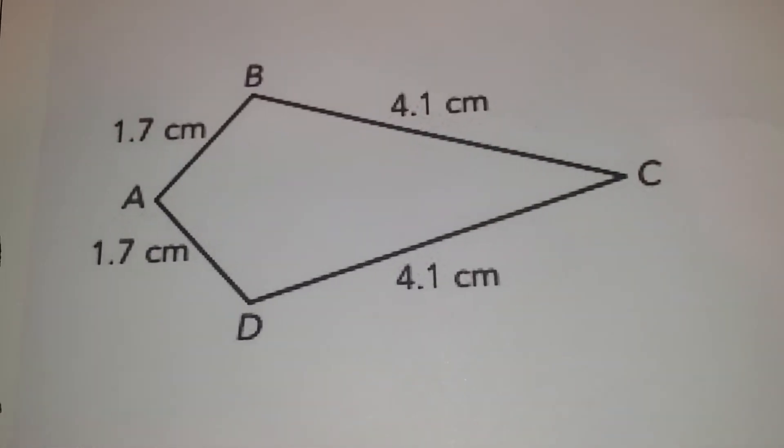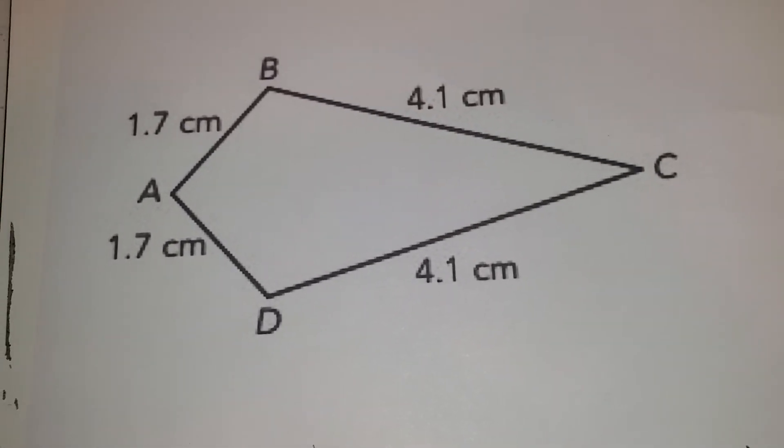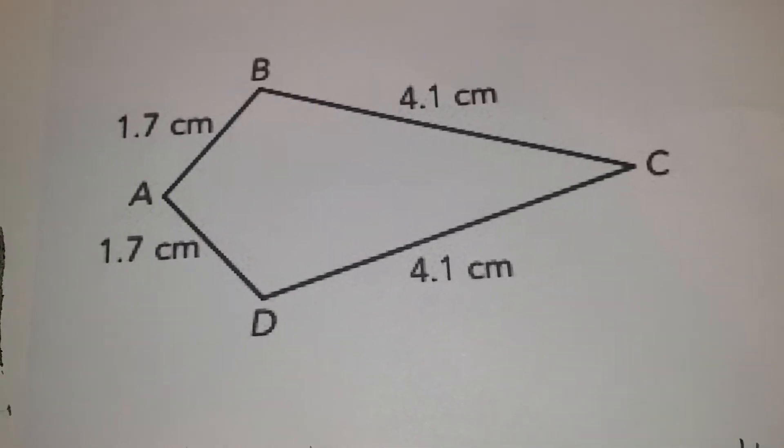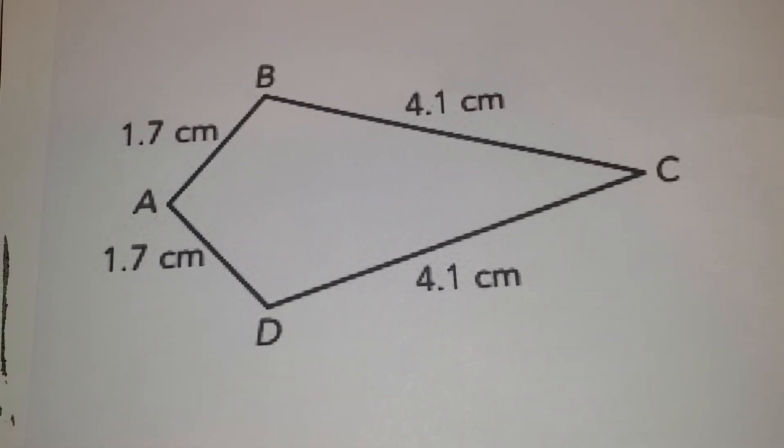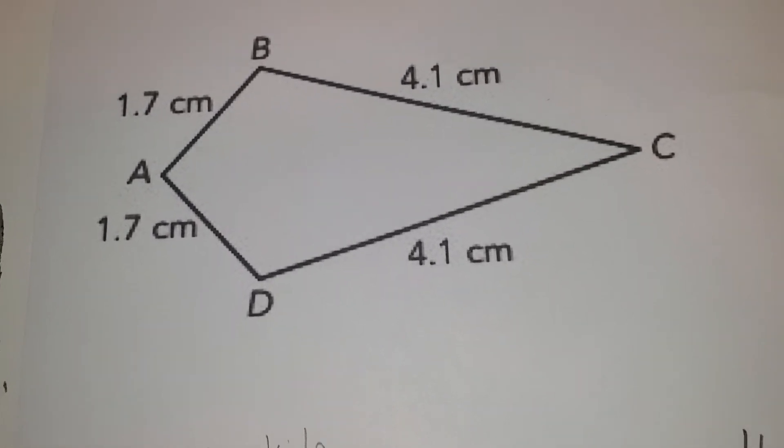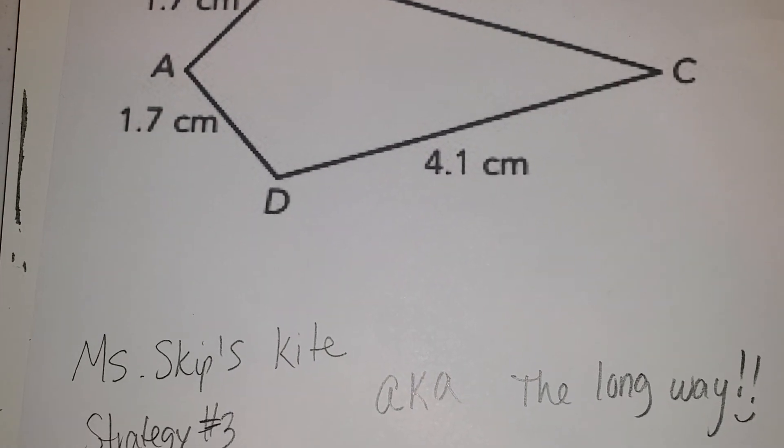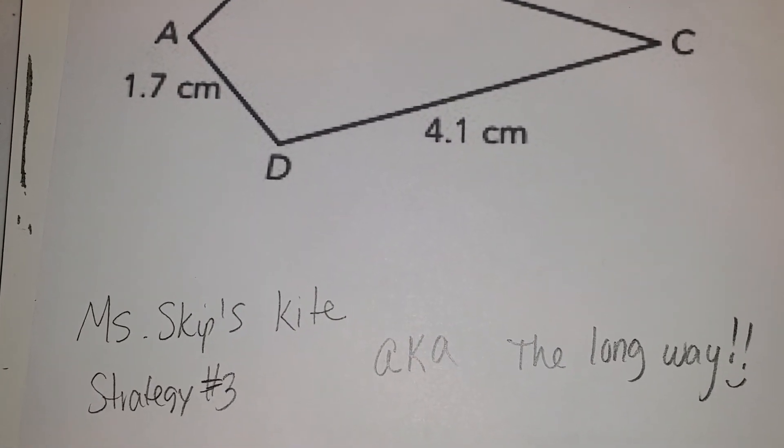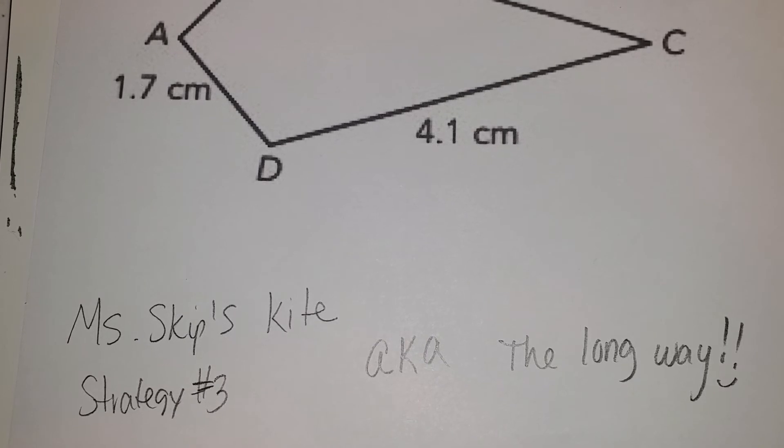So we're going to have one more strategy just because I like you to have options to see what feels most comfortable to you. So this strategy is going to be called Miss Skip's kite strategy three, a.k.a. the long way.